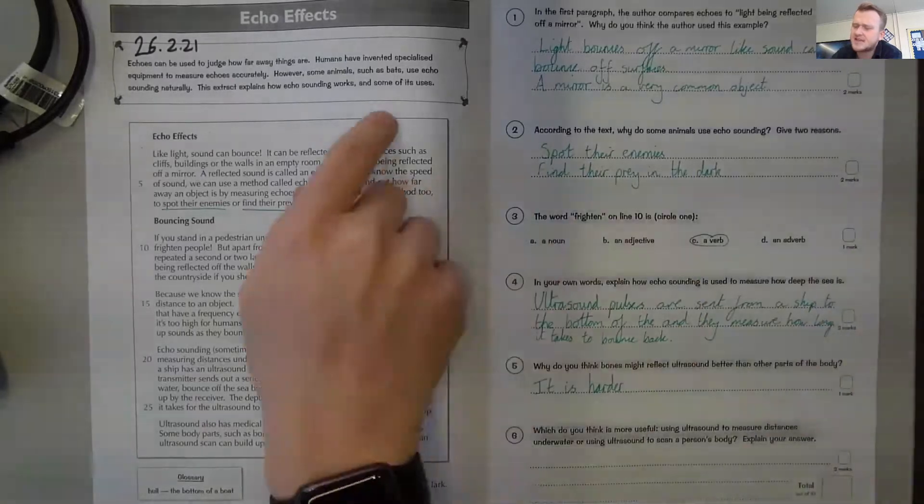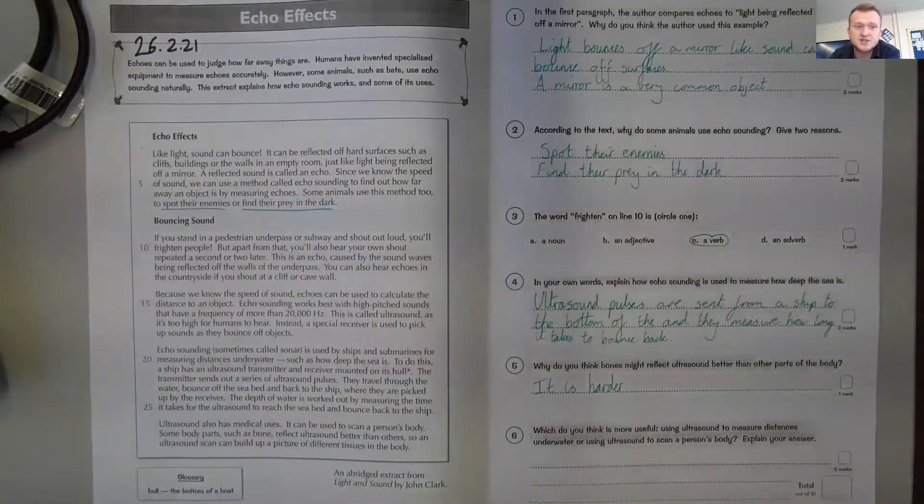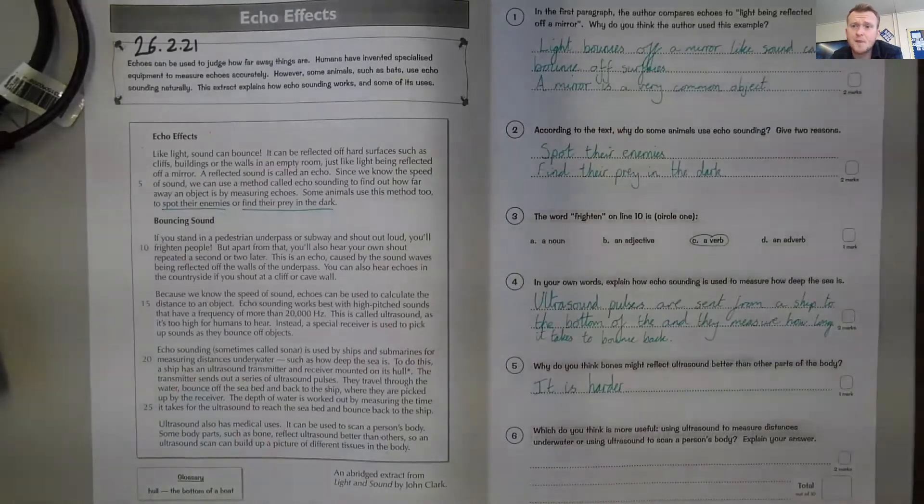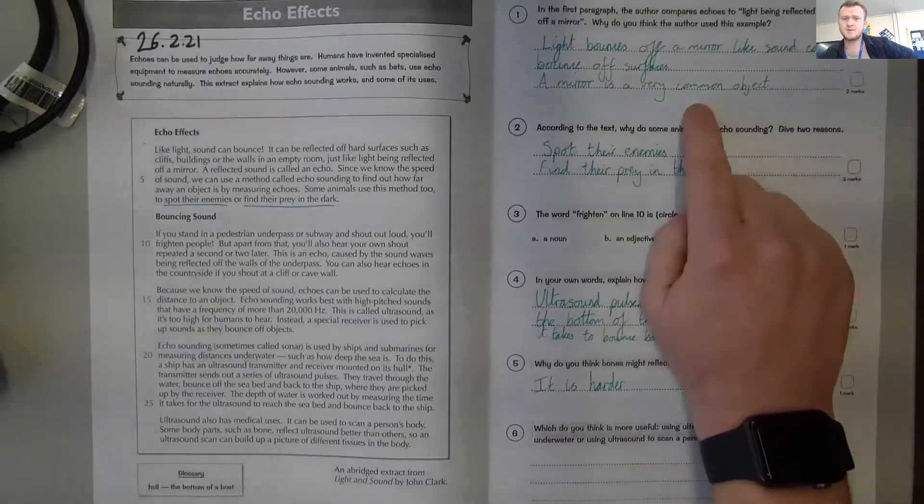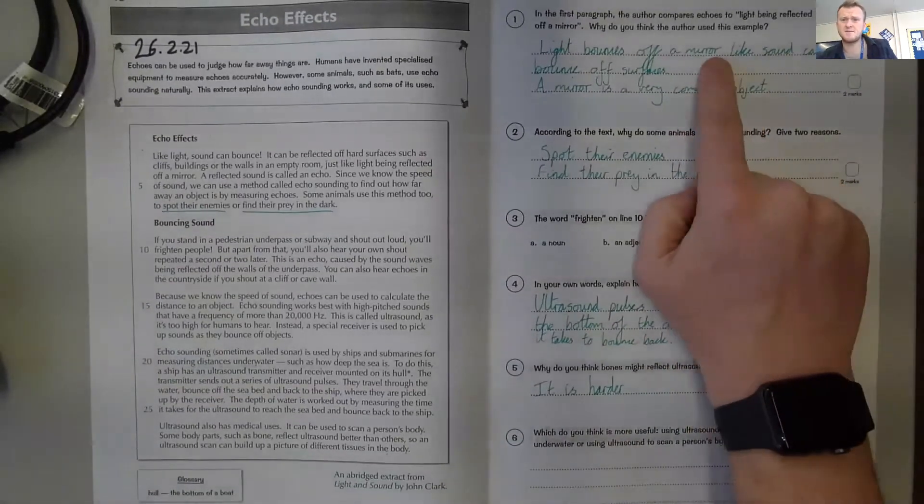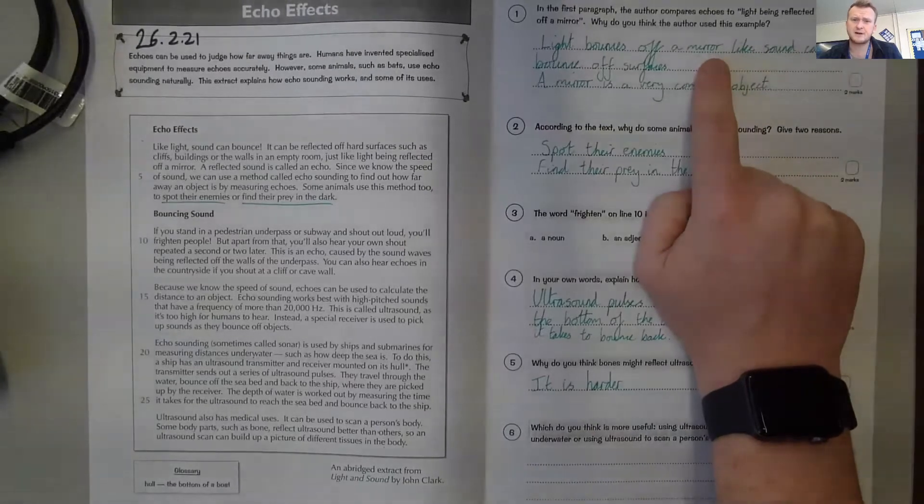Well, in this section here it talks about how sound bounces off surfaces, a bit like how light bounces off surfaces as well. And one of the most common objects that we use with light bouncing off and pictures bouncing off is a mirror. So a mirror is a very common object, and I also put that light bounces off a mirror like sound can bounce off surfaces.